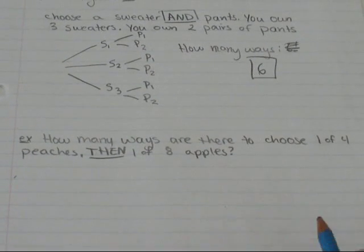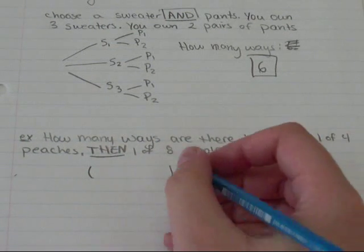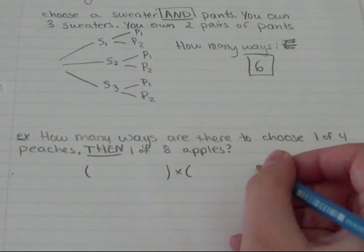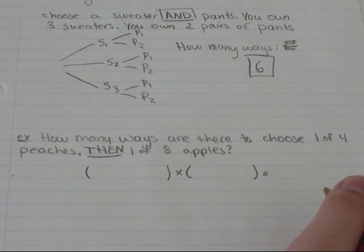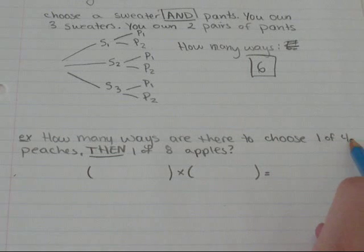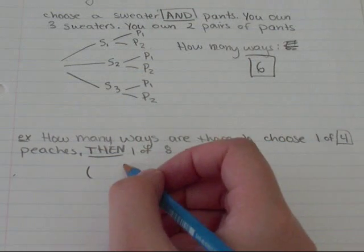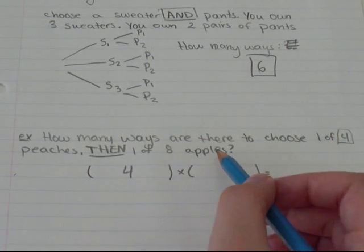So first I'm going to think, I'm going to choose a peach then an apple. So that's multiply by. So how many ways are there to choose one of four peaches? Well, I can choose peach one, peach two, peach three, peach four. So one of four, there's going to be four ways I can choose a peach times eight apples.